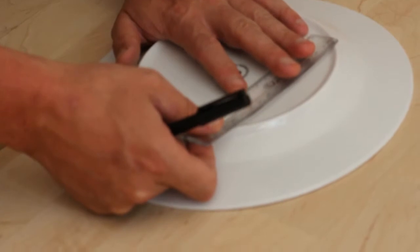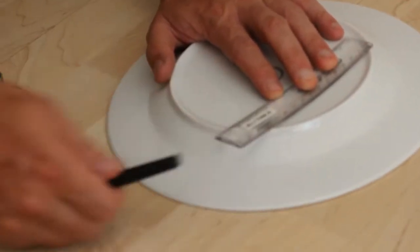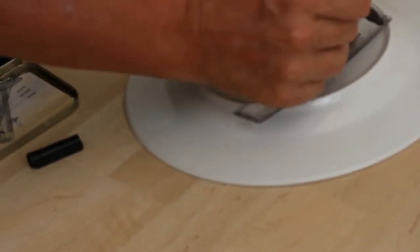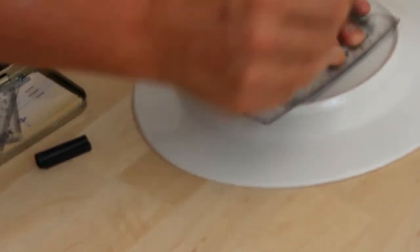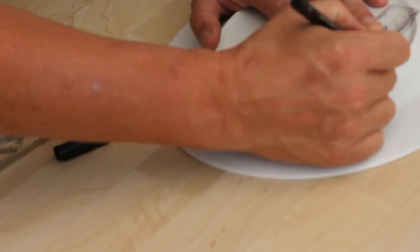First of all we draw a chord. I'm going to draw a chord that's 120mm long. And then we mark the middle of that chord, which in this case will be 60.